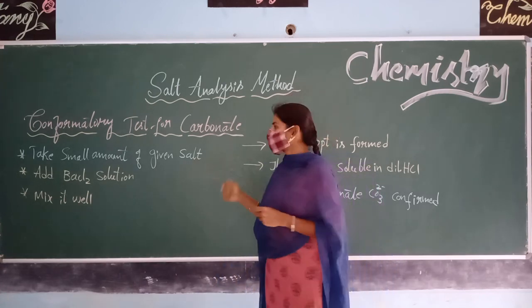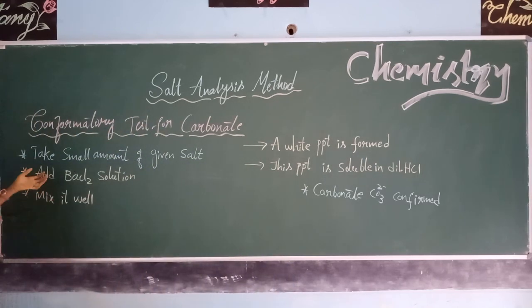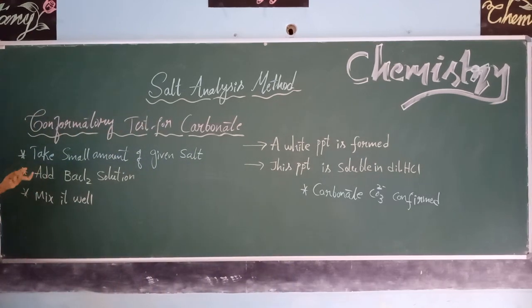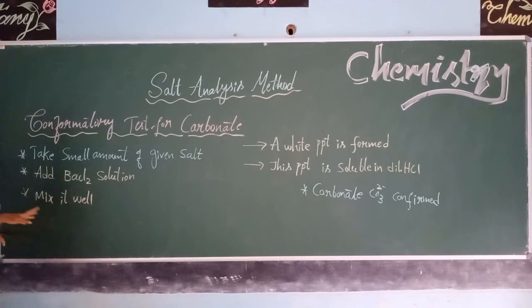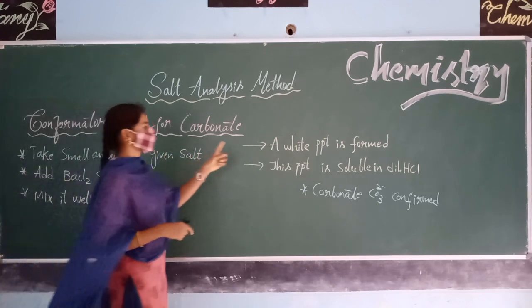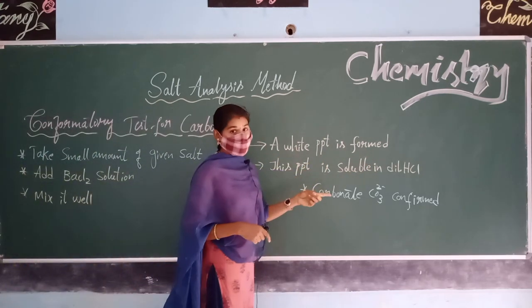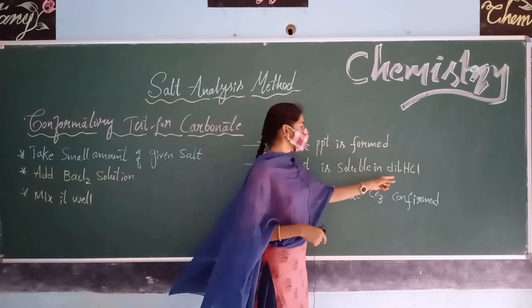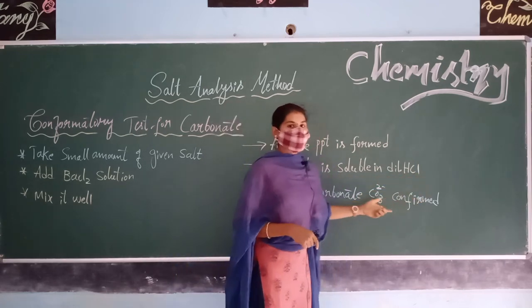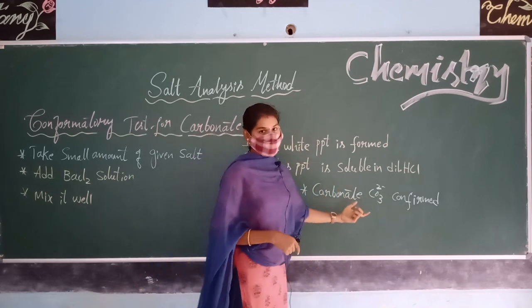We have to take a small amount of the given salt in a test tube and add BaCl₂ solution to that salt and mix it well. If a white precipitate is formed, then we can say that the anion is carbonate. Furthermore, if this white precipitate is completely soluble in dilute HCl, then we can confirm that the anion in the given salt is carbonate.